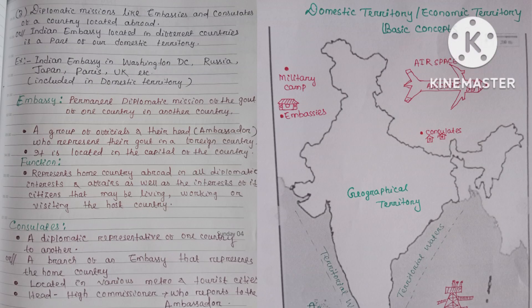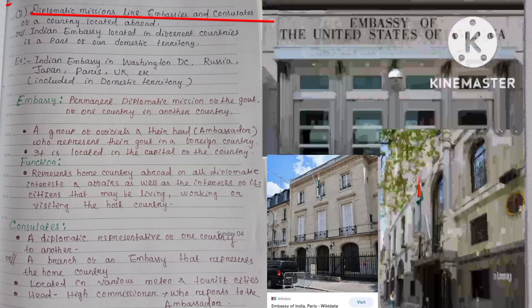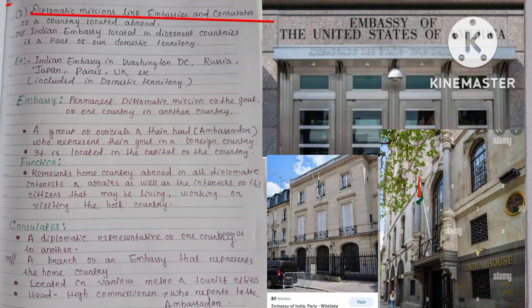Second, domestic territory includes diplomatic missions like embassies and consulates of a country located abroad. For example, the Indian embassy located in different countries — Washington DC, Russia, Japan, Paris, UK — is a part of India's domestic territory.